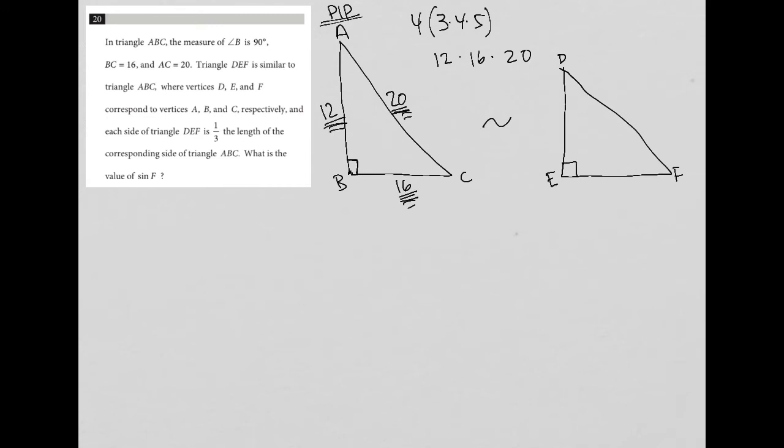And we're told that each side of triangle DEF is one-third the length of the corresponding side. So one-third of 12, well, that's 4. One-third of 20, well, that's 20 over 3. And one-third of 16, well, that's 16 over 3. Never feel pressured to find a decimal or some other simplified version when you're doing fractions, especially on the non-calculator section. Nothing wrong with calling this 20-thirds and 16-thirds. Nothing wrong with keeping it as an improper fraction.